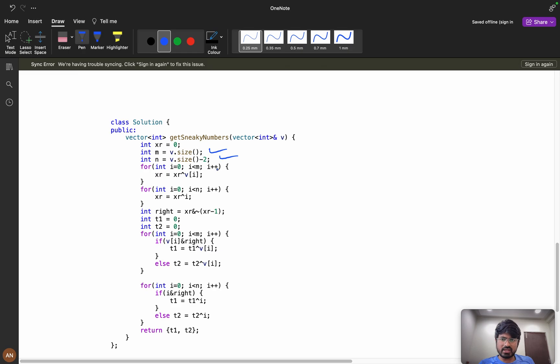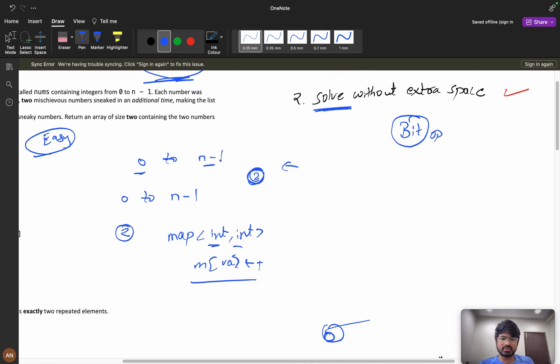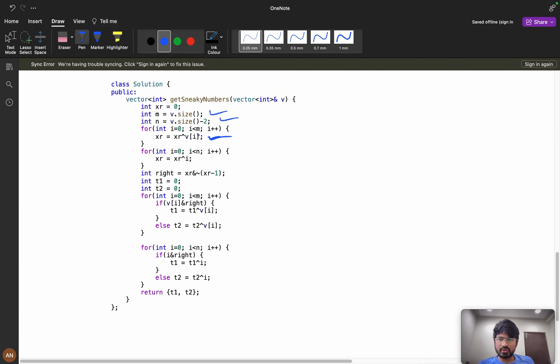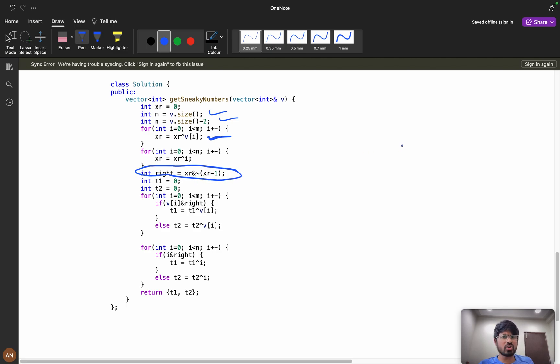Now it's simple: m size, n size. For i equals to 0, i less than m, first I am XORing all my values. As you can see, XOR v1 XOR v2, after XORing v1 and v2, I got this.